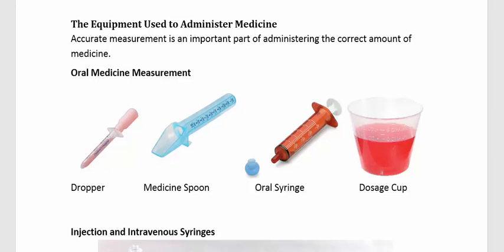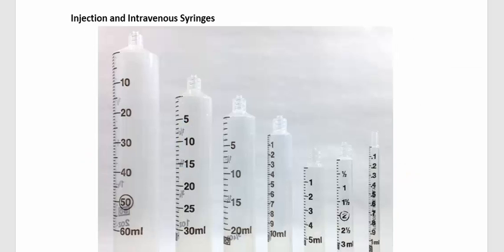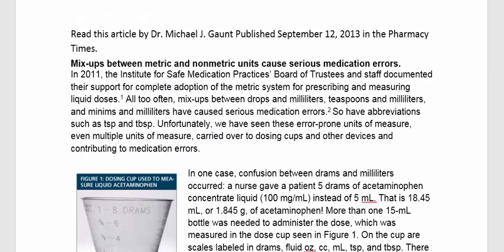The equipment used to administer medicine: accurate measurement is an important part of giving the correct dose. For oral medicine, common tools include a dropper, medicine spoon, oral syringe, and dosage cup — all with precise measurements on the side. For injection and intravenous delivery, syringes come in sizes of 1 mL, 3 mL, 5 mL, 10 mL, 20 mL, 30 mL, and 60 mL. Smaller syringes are typically used for injection; larger ones for intravenous use.